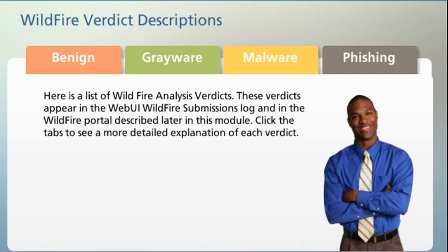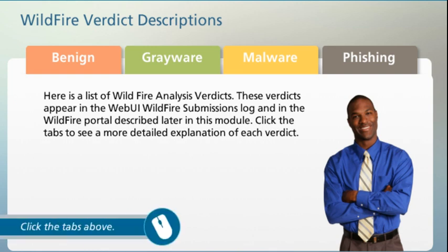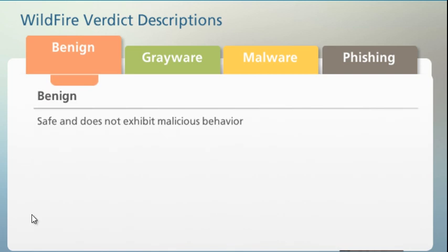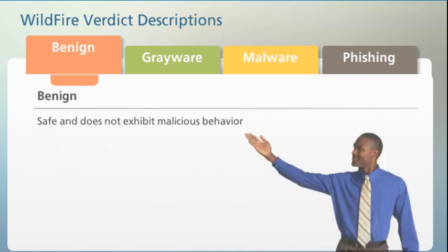Here is a list of Wildfire analysis verdicts. These verdicts appear in the WebUI Wildfire Submissions Log and in the Wildfire Portal described later in this module. A benign verdict is given by Wildfire to files or URLs that have been found to be safe and pose no threat to your organization.